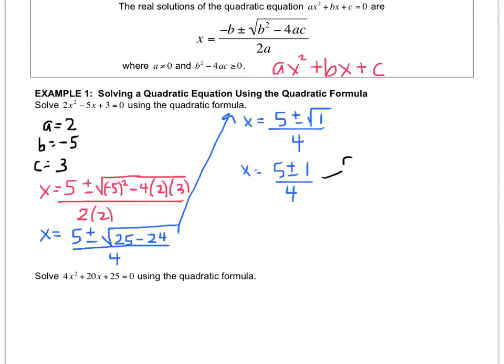Then you split it up and you say, well, it could be 5 + 1 over 4, or it could be 5 - 1 over 4. So the possible values of x are 6/4, which would reduce to 3/2, and the other value of x is 4/4, which is 1.